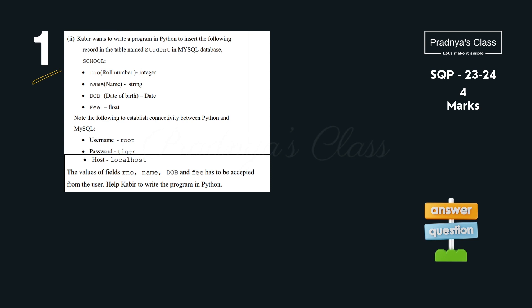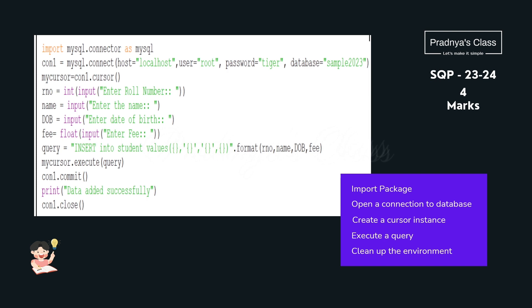Before attempting the question, read it carefully. Kabir has to write a program to insert data into a table. The table name is 'student' and here are the fields of the table. For connectivity, the following information is provided — three parameters for the connect function, and the fourth parameter will be the database name. When inserting a record, we need to take this data as input from the user. This question has been taken from the recent sample paper and is for four marks.